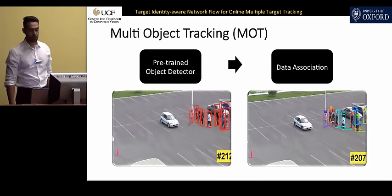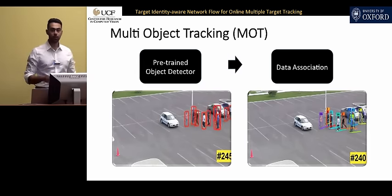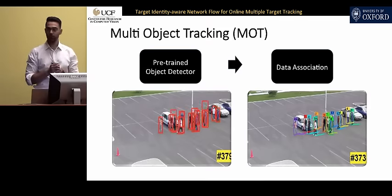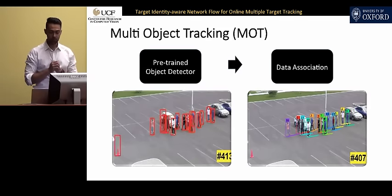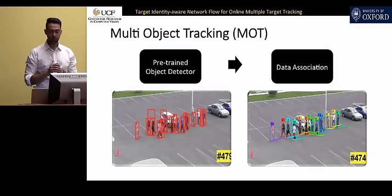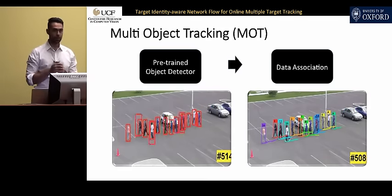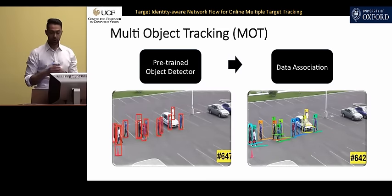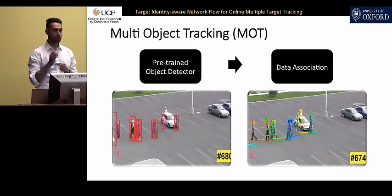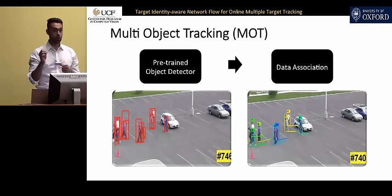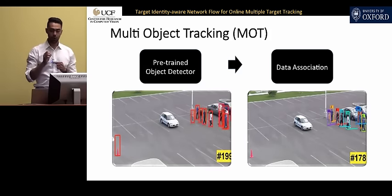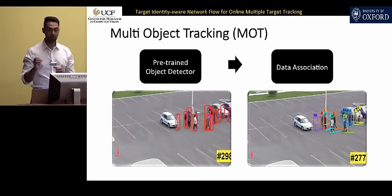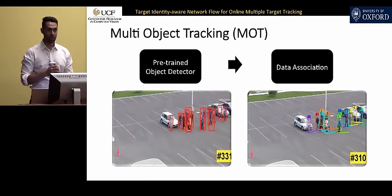Most previous multiple object tracking methods divide the problem into two separate problems. First, a pre-trained object detector is used to get the object hypothesis in every frame of a sequence, as you can see in the bottom left. Later, the object detections that belong to the same person are linked together to form the tracks and assign one ID. This process is called data association.